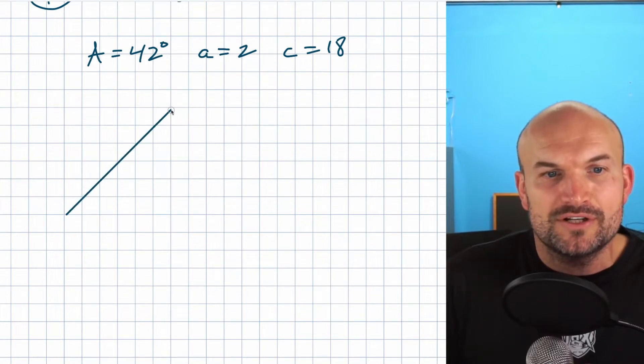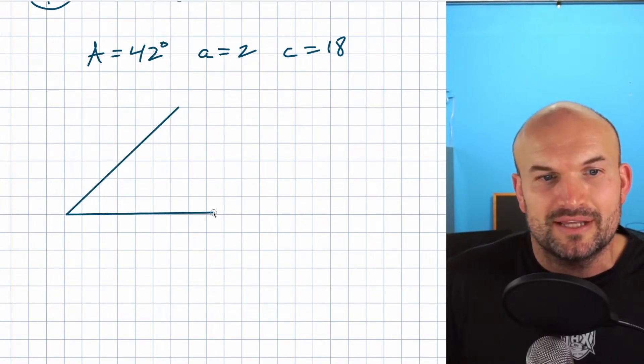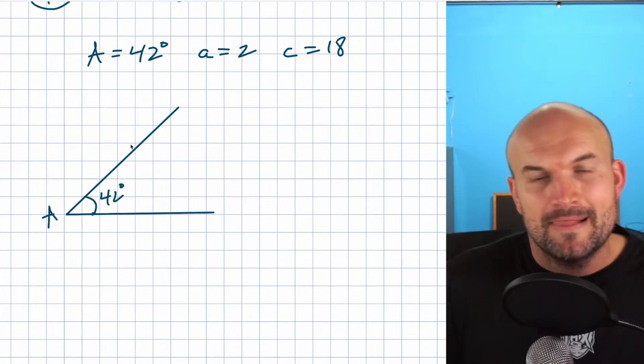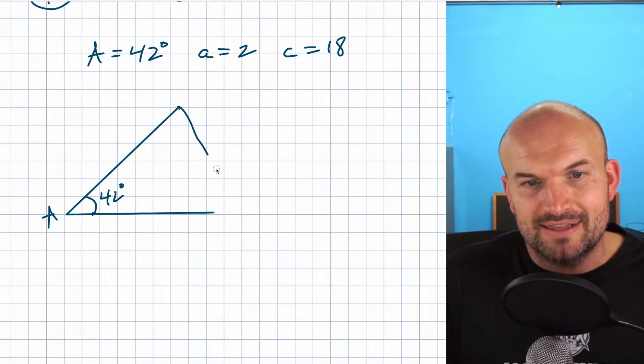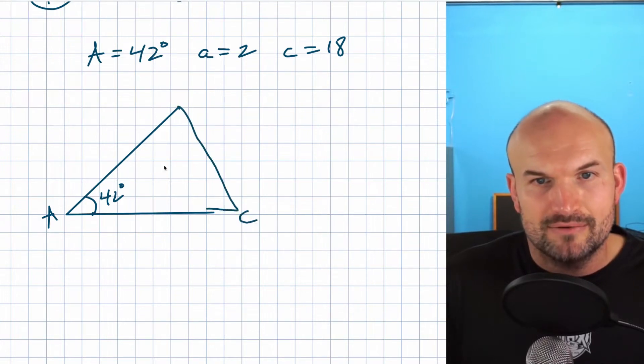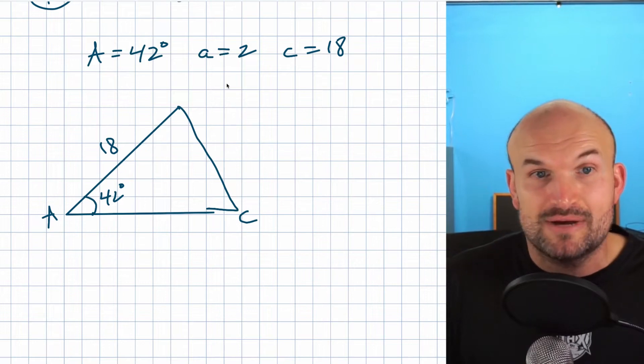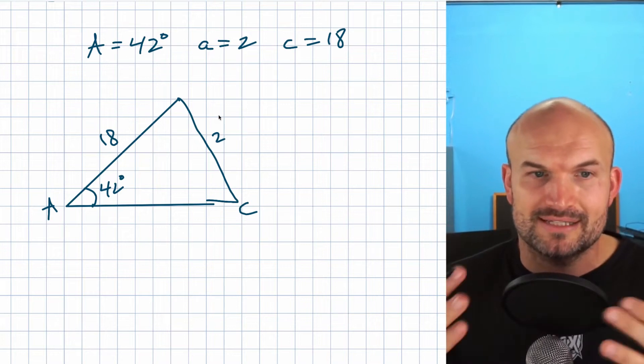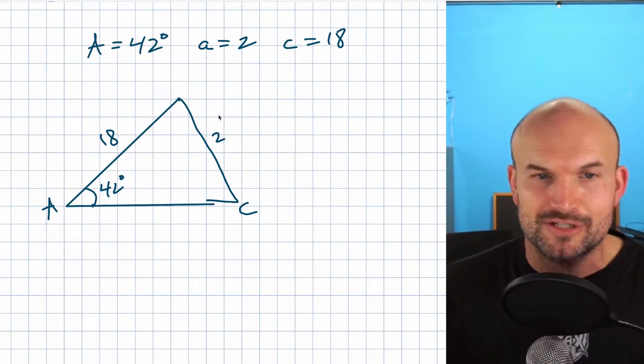If I was to go ahead and draw this triangle here, I would say 42 degrees is very similar to 45 degrees, right? So it's going to look something like this. We could say that's 42 degrees, that's an A. We're going to call this side length over here c, which would be 18. And then this length, which is opposing of this angle, is going to be 2. If you just look at this as a rational problem, this absolutely makes no sense.